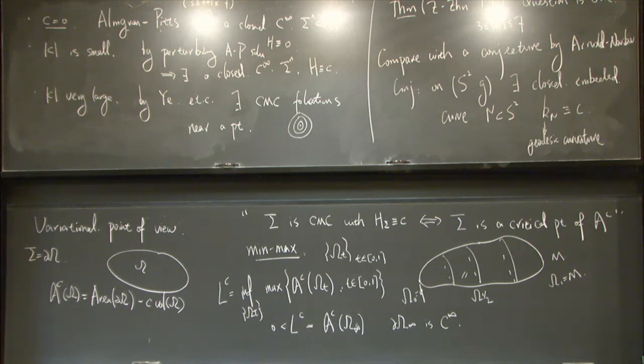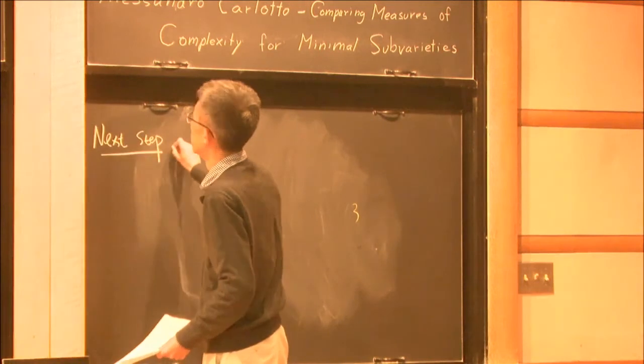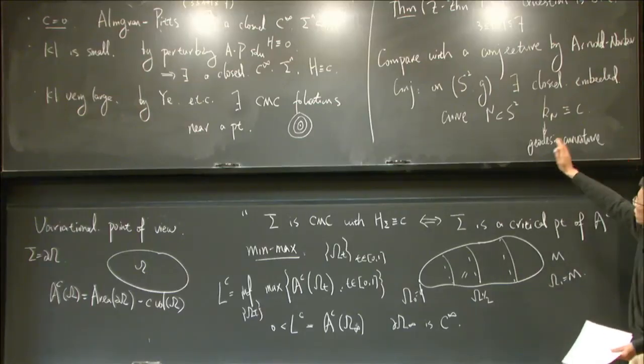Maybe in the last minutes, let me quickly describe what we want to do for the next step. I want to say that Arnold also conjectured this conjecture by changing C to be a function.